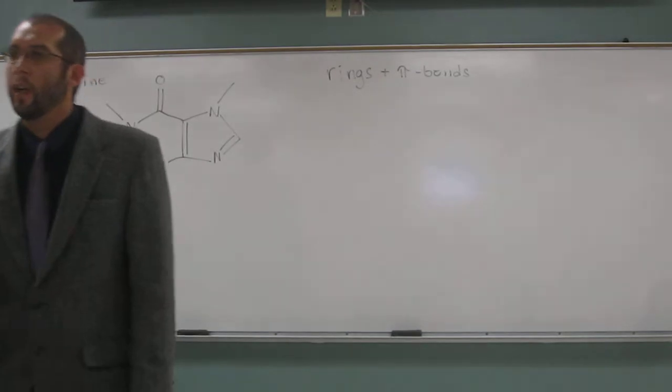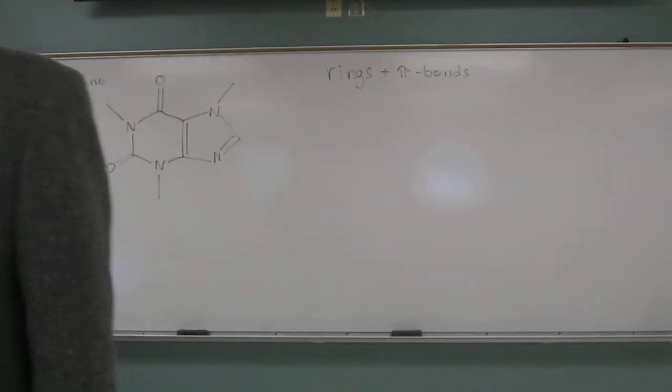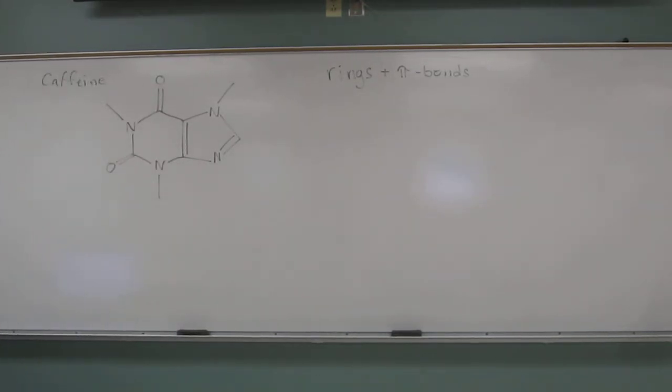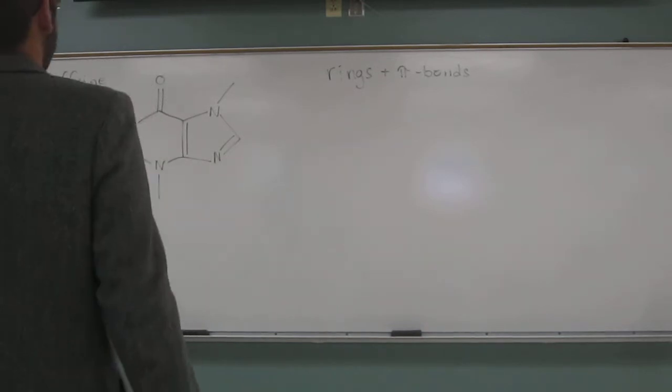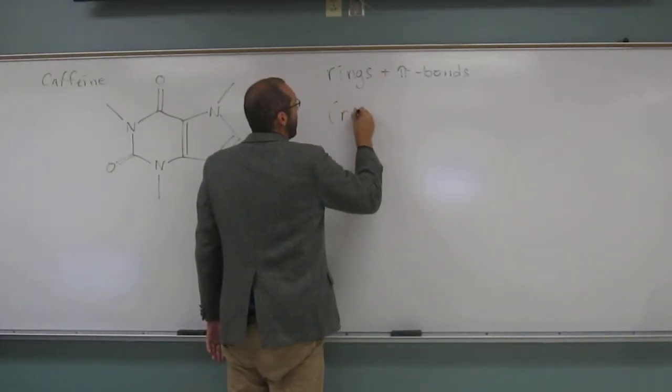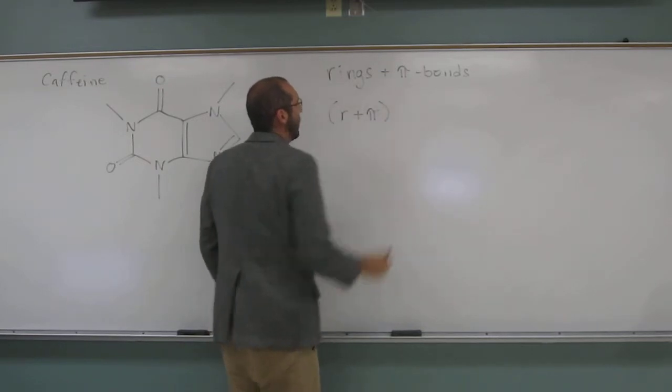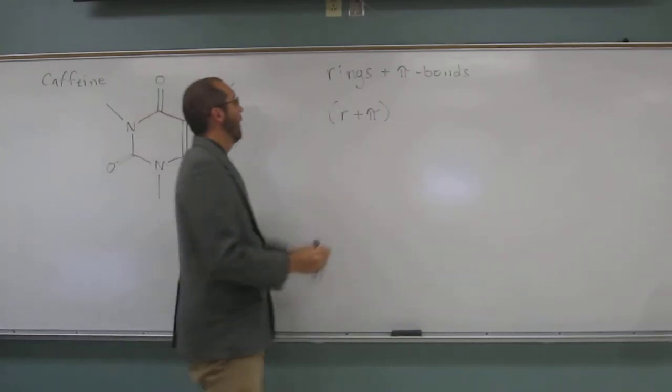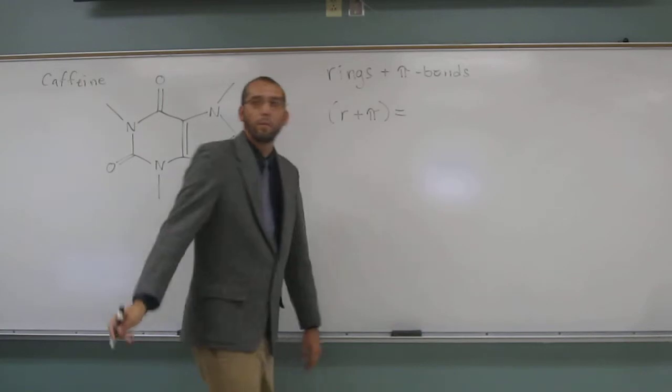The last problem we did, we figured out that caffeine has six units of unsaturation, right? Or six degrees of unsaturation. So we can ask ourselves, well, how many rings do we have and how many pi bonds do we have? And that will give us the same information.